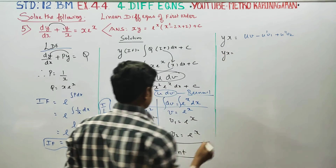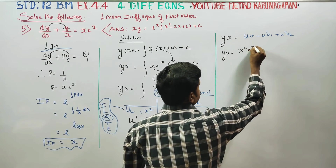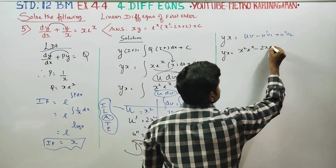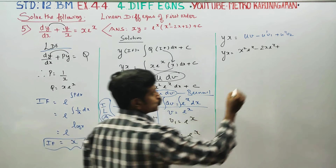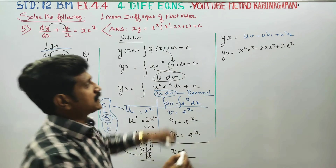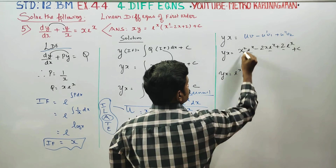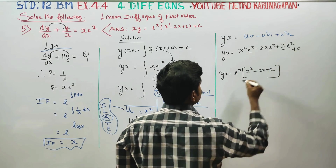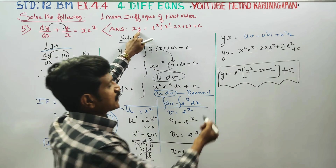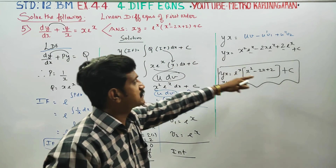So y times x equals e power x times (x squared minus 2x plus 2) plus C. Therefore, the final answer is y equals e power x times (x squared minus 2x plus 2) plus C, all divided by x.